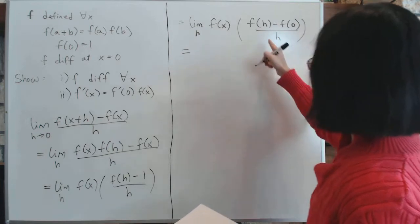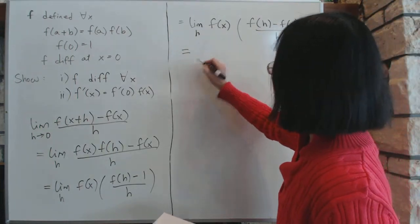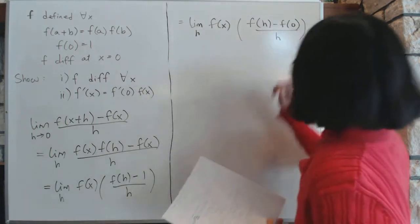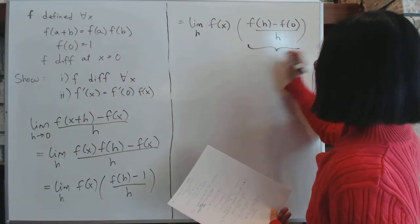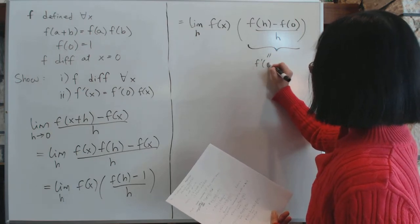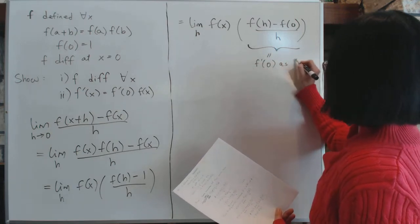Now what happens this? Now as h approaches 0, this thing is equal to what? This is exactly f'(0). This is equal to f'(0) as h approaches 0, because this is the exact definition of what it is.